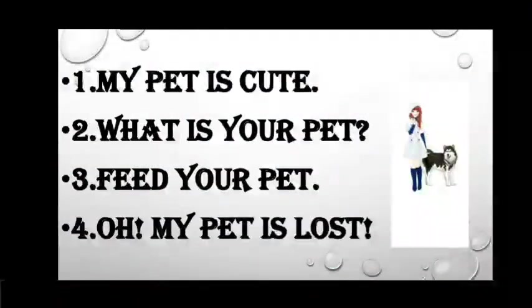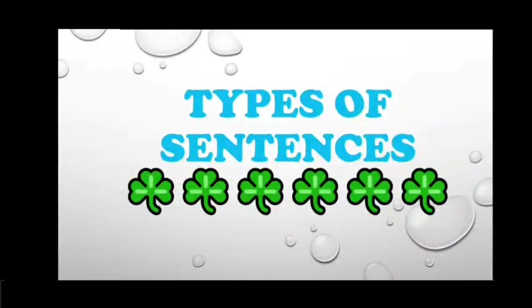Children, look at these sentences and picture. First one is: my pet is cute. Second one is: what is your pet? Third one is: feed your pet. And: my pet is lost. What are these? These are different types of sentences. Today our topic is types of sentences — what is a sentence, how many types of sentences, and what are the examples? Let us discuss now.